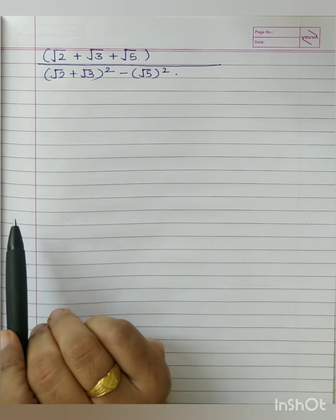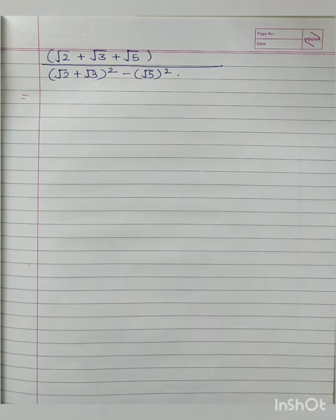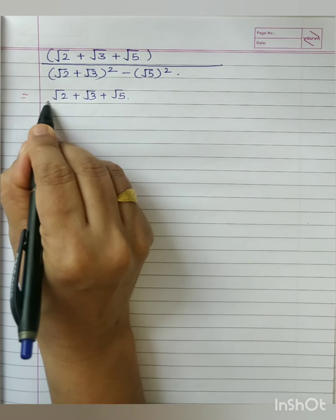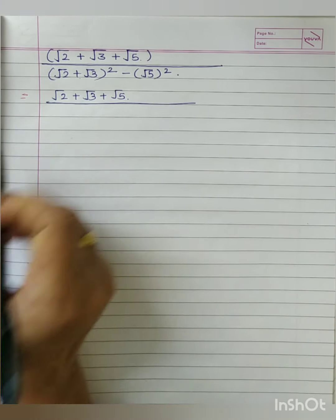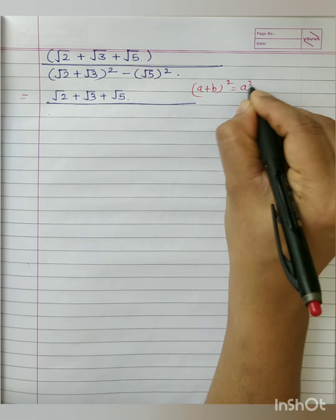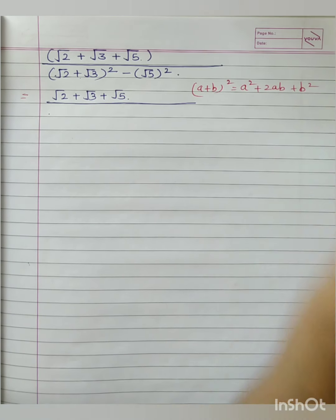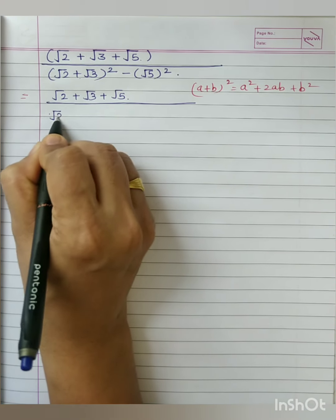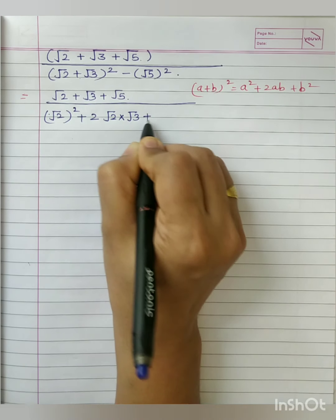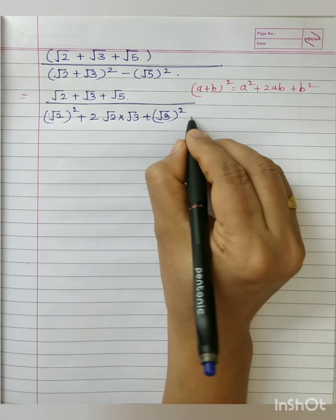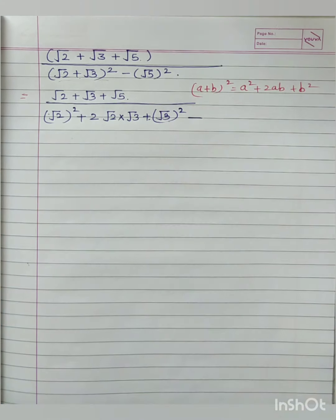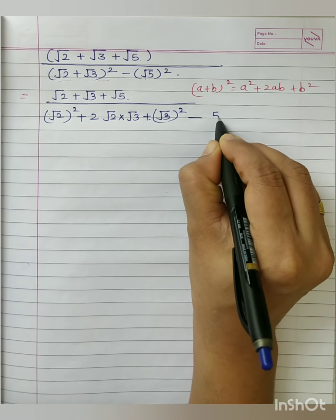Here we need to apply the (a plus b) whole square formula. The numerator stays as root 2 plus root 3 plus root 5. In the denominator, applying a plus b whole square equals a squared plus 2ab plus b squared: root 2 squared, plus 2 times root 2 times root 3, plus root 3 squared — this is the expansion — minus root 5 squared. Root 5 squared gives us 5.